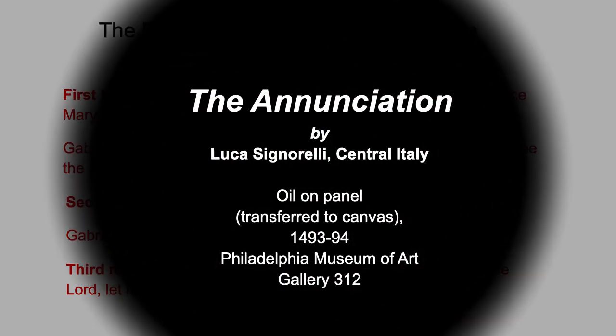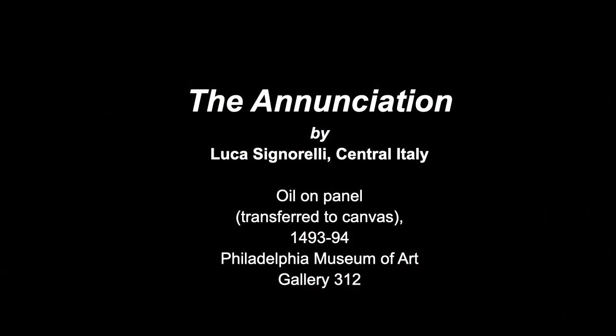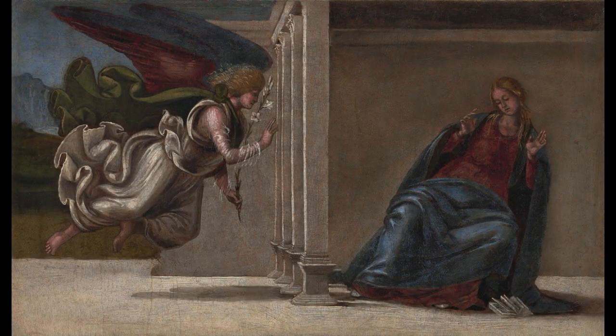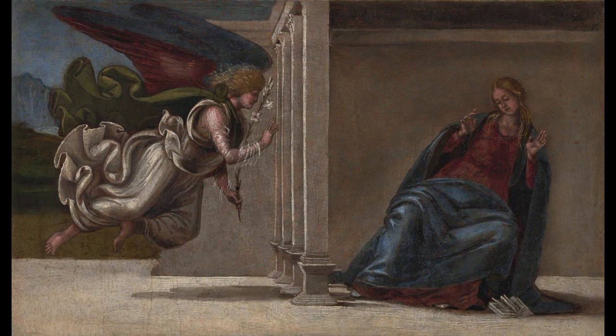Let's look at another of the museum's Annunciation images by Luca Signorelli, another artist from Italy in the 1400s. How does this painting fit into the idea of three moments? If we think of the serenity of that first image, this painting by Signorelli might come as a little bit of a surprise. This is clearly the first moment when Gabriel arrives. We see Gabriel has a kind of forward momentum and we see Mary reeling back. Her hands are up in surprise. She's dropped her book. She's looking down. And Signorelli seems to have made her head a little bit small proportionally, just to emphasize the sense that she's pulling back.